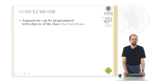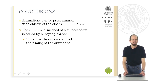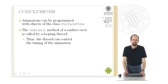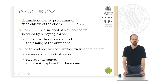What did we learn in this unit? We learned that animations can be programmed with objects of the class SurfaceView. We learned that the onDraw method of a SurfaceView is not called by the runtime system, but by a dedicated looping thread, and therefore this thread can control the timing of the animation. The thread accesses the SurfaceView via its SurfaceHolder, receives a canvas to draw on, and after drawing, releases the canvas to have it displayed on the screen. Thank you for your attention.